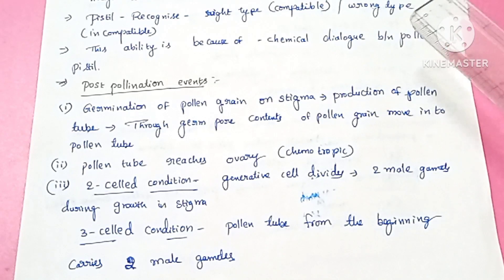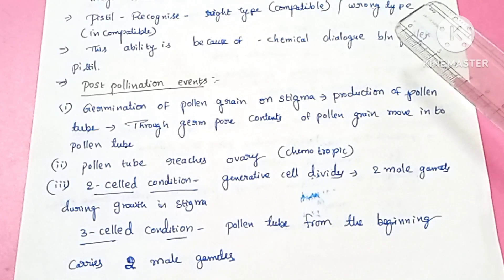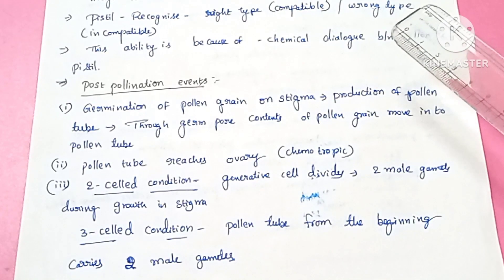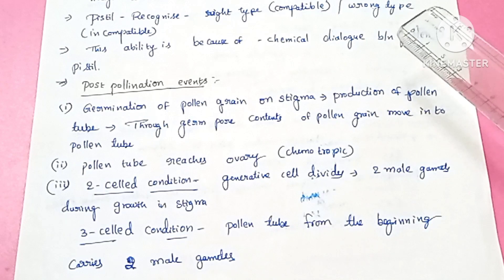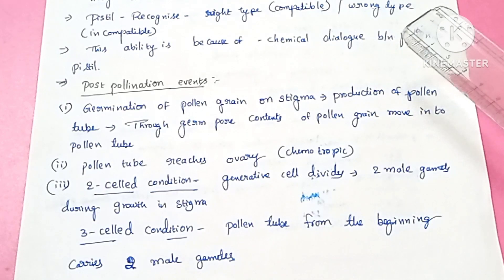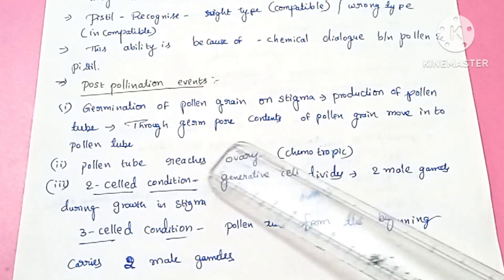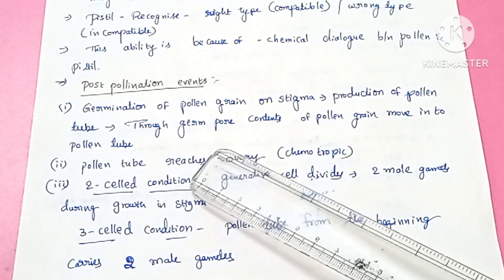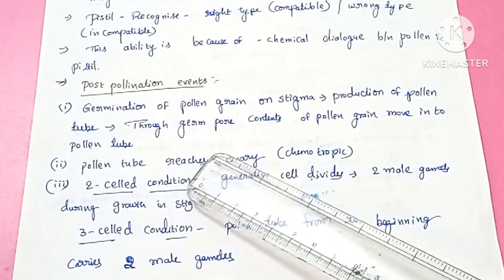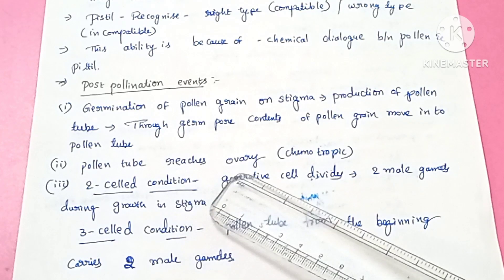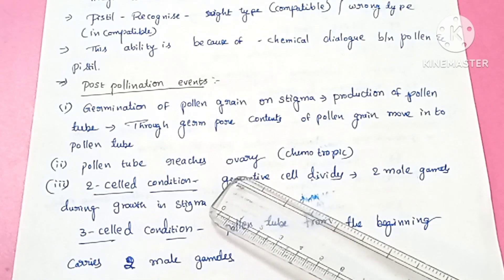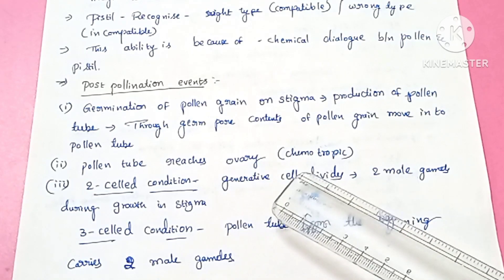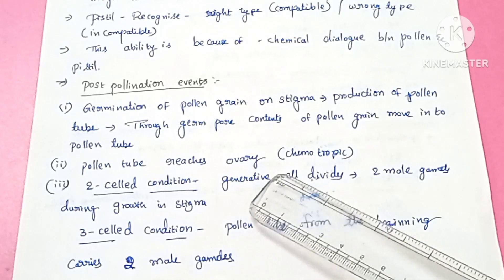After the entry of the pollen grain into the pistil, germination of the pollen grain occurs on the stigma. After that, the formation of the pollen tube occurs. On the surface of the exine there is an aperture called a germ pore. By means of the germ pore, the contents of the pollen enter into the tube, and this pollen tube travels from the stigma through the style and finally reaches the ovary through chemotropic movement — movement stimulated by chemicals.